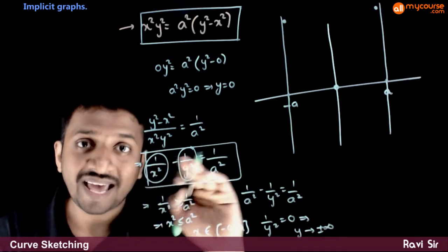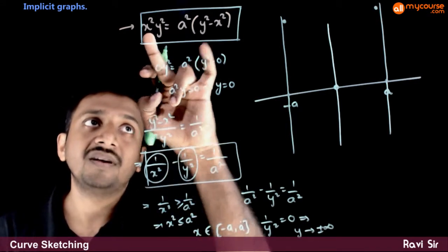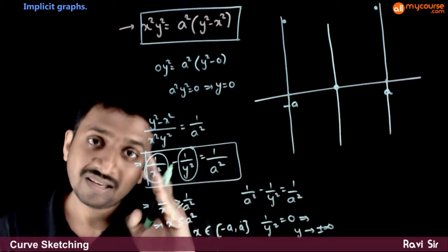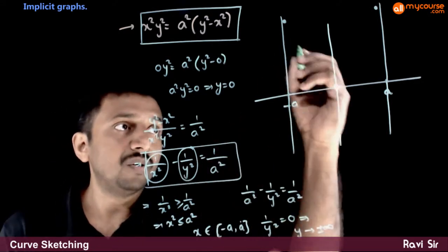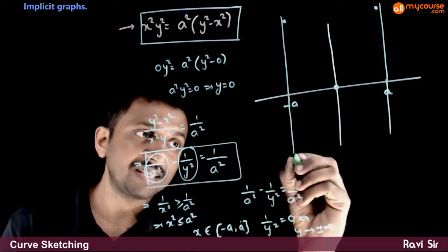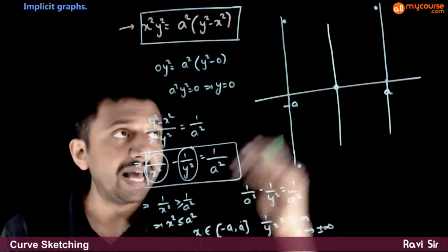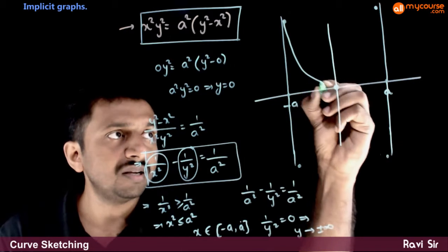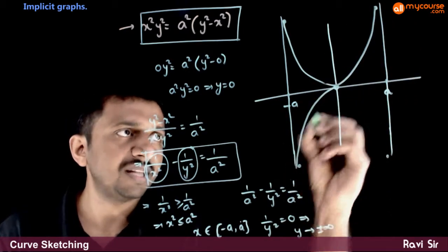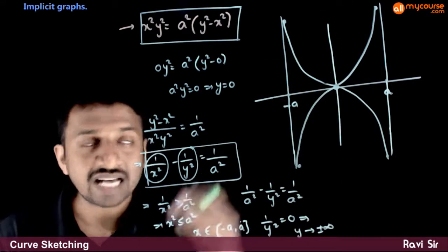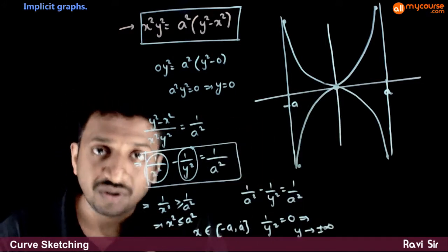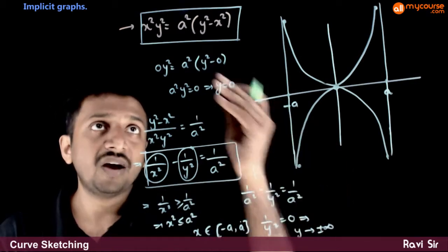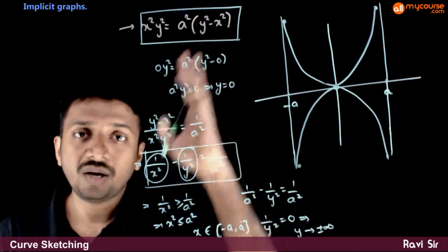The graph is symmetric about the x-axis — if you replace x with -x, the equation is unchanged, so the graph is also symmetric about the y-axis. So if one point exists, its reflections exist too. Joining these with a smooth curve: the graph is symmetric about both axes, passes through (0, 0), and as x → ±a, y → ±infinity. This is the graph of x²y² = a²(y² - x²).